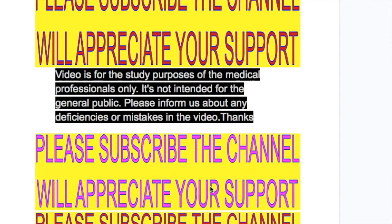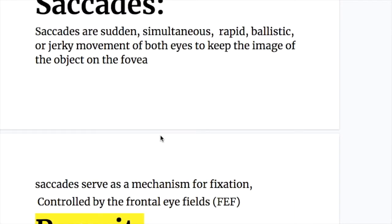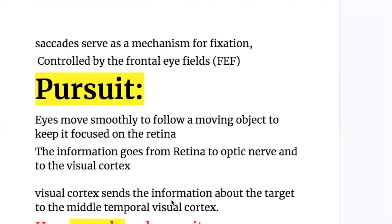In this video, we'll discuss and compare saccades and pursuits and their connections in the brain. Saccades are sudden, simultaneous, rapid, ballistic or jerky movements of both eyes to keep the image of the object on the fovea of the retina.